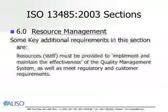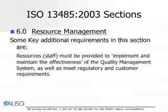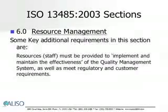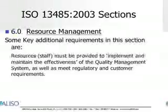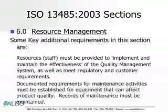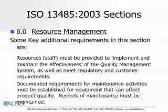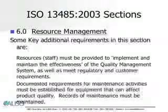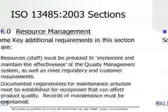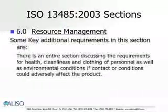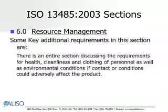Some key additional requirements found in this section are: resources or staff must be provided to implement and maintain the effectiveness of the quality management system, as well as meet the regulatory and customer requirements. Documented requirements for maintenance activities must be established for equipment that can affect product quality, and records of maintenance must be maintained. There is an entire section discussing the requirements for health, cleanliness, and clothing of personnel, as well as environmental conditions if contact or conditions could adversely affect the product.